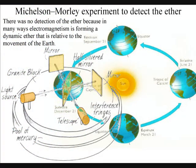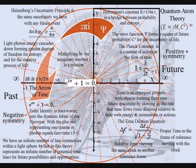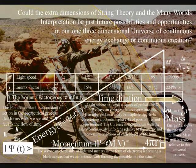This process unites gravity with the other three fundamental forces, within a universal process that is unfolding in just three dimensions, with one variable in the form of time. In such a theory, the parallel universes of string theory are just future possibilities and opportunities in our one three-dimensional universe of continuous energy exchange, continuous creation.